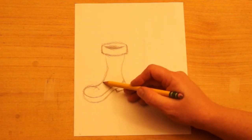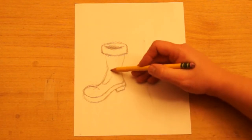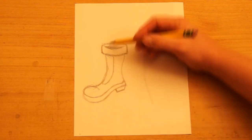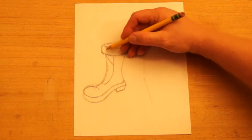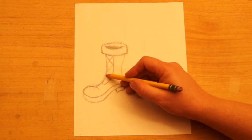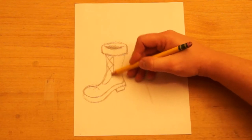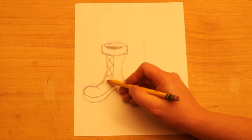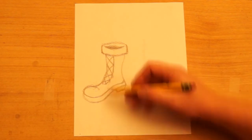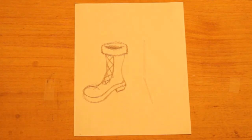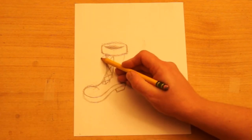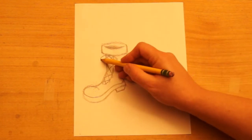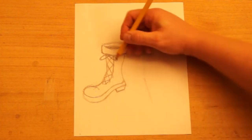There are some laces on this boot, so I'm going to curve around this part right here. Then I'm going to draw some X's where the laces go across each other, down to about here. Up at the top I want to make two loops where the laces have been tied into a bow. Two ovals that are slanted.